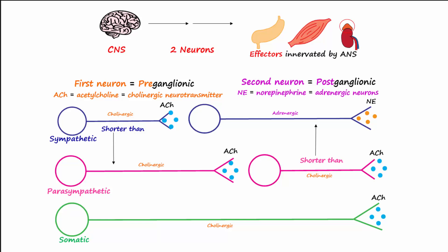Cholinergic receptors for acetylcholine are located in several places. They are found on the dendrites or cell bodies of the postganglionic neurons of the ANS. These cholinergic receptors are called nicotinic 2, or N2, receptors. The cholinergic receptors located on effectors innervated by the parasympathetic nervous system are known as muscarinic, or M-receptors.